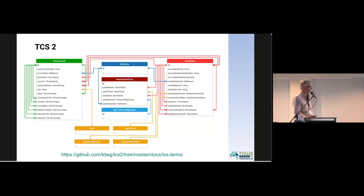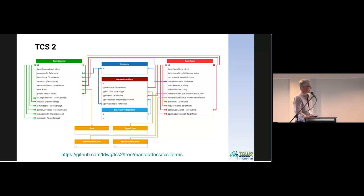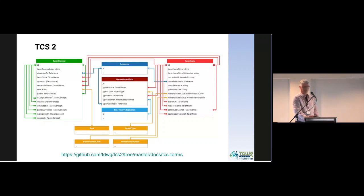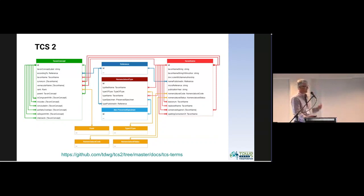This is all our terms. Basically, we've got the two main classes: taxon concept and taxon name. And then we have one in the middle in dark red — nomenclatural type — which is something we added. It's partly TCS, partly Darwin Core, so we can actually use Darwin Core as well. It links to the name and then to a specimen — I've used a preserved specimen here, but in examples I've also used a material citation. It links to a specimen that can be recorded in Darwin Core, and you can use the type status property in Darwin Core for that.